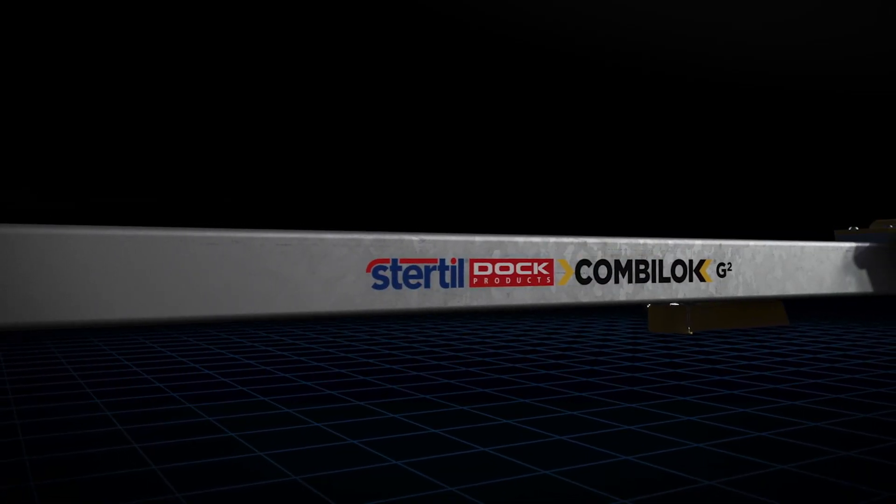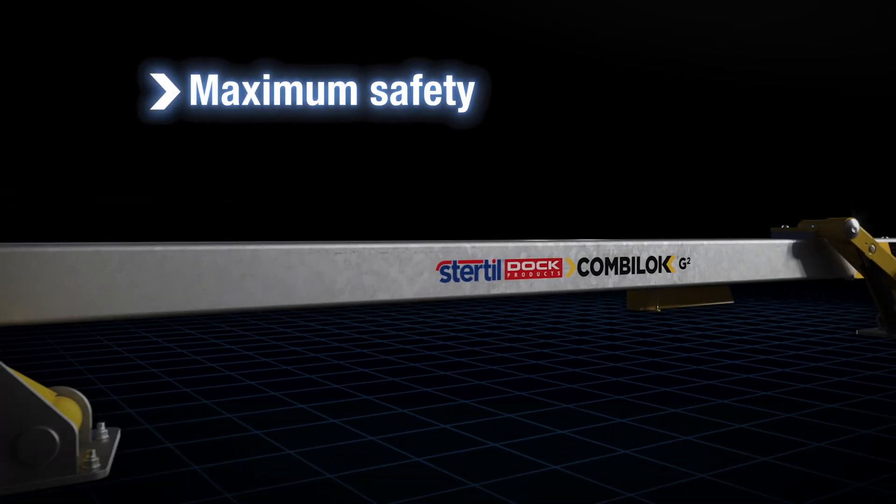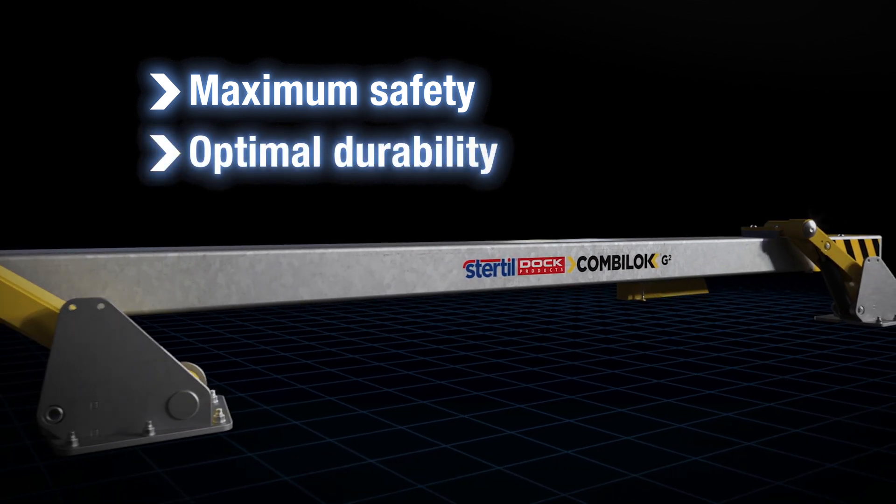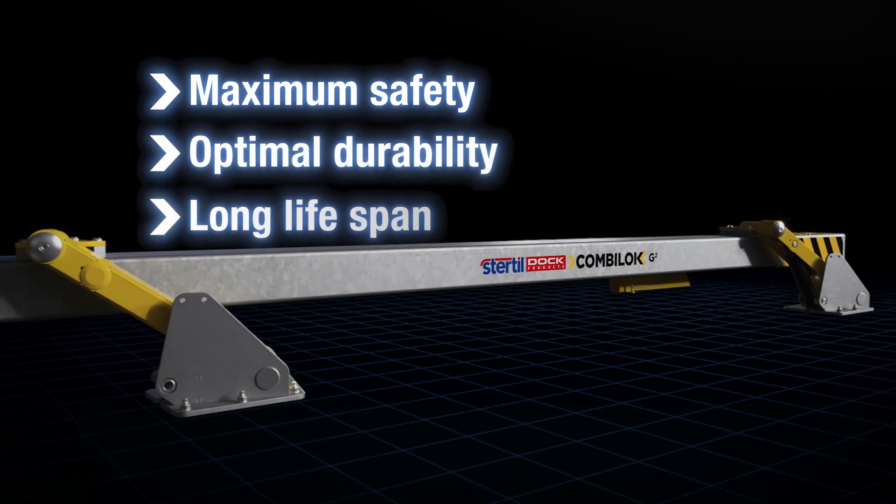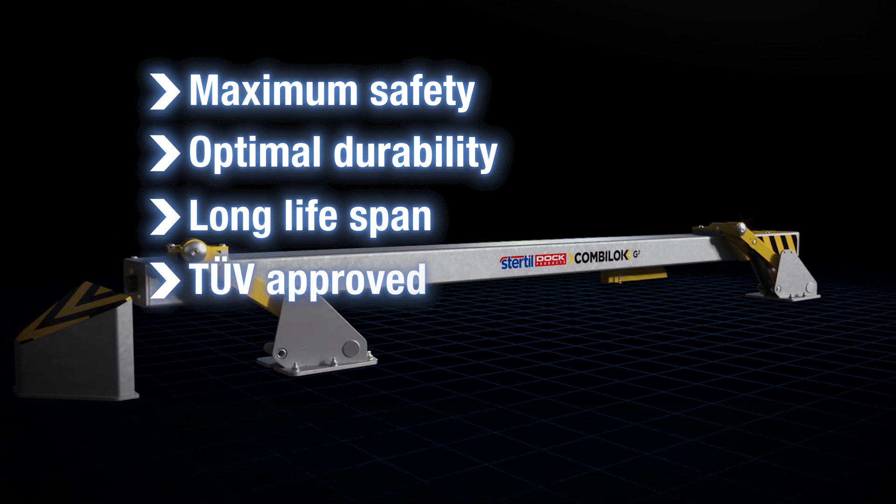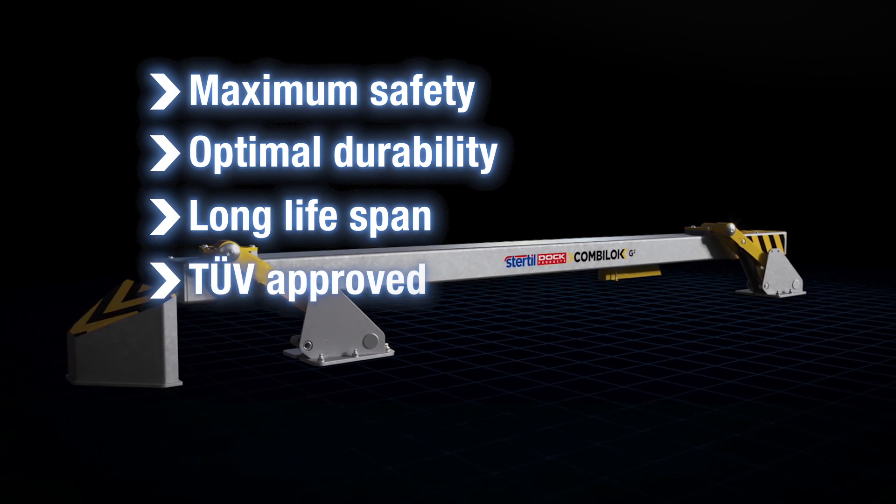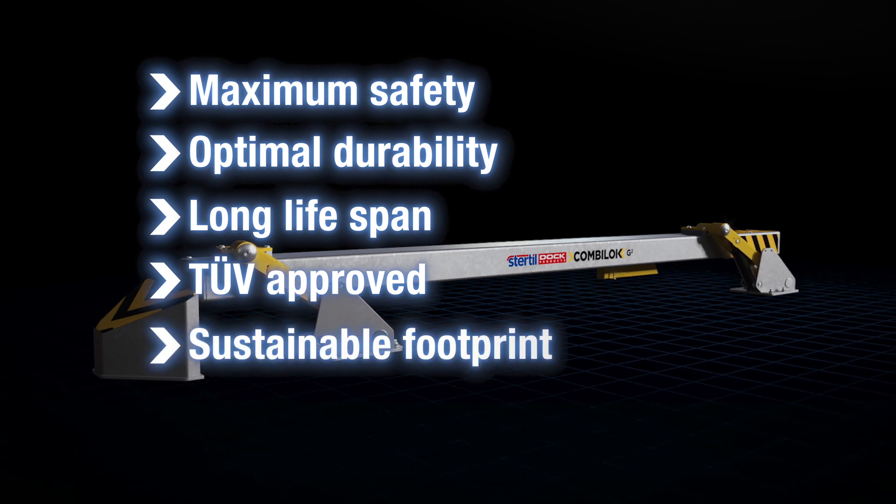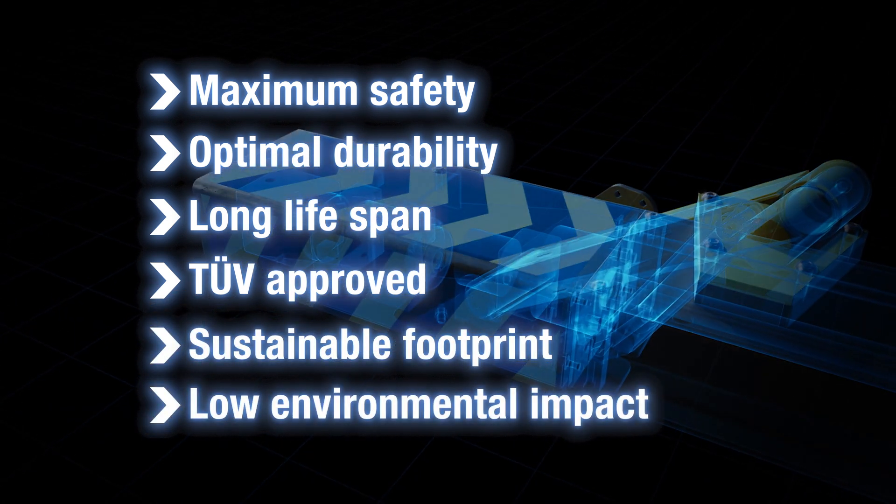The CombiLock G2 ensures maximum safety, has been engineered for optimum durability, has a long lifespan, is accredited by TUV, and complies with the EC Machinery Directive. It has been developed based on a sustainable footprint with low environmental impact.